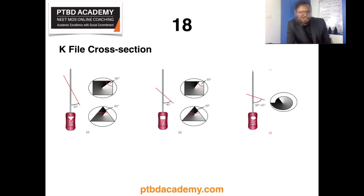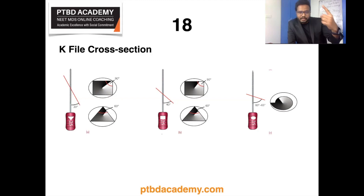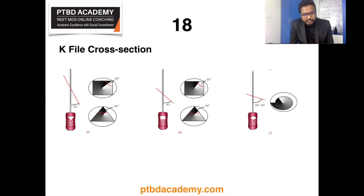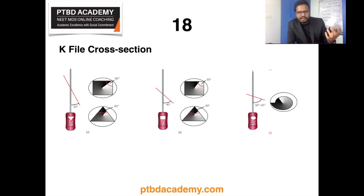If you observe these cross-sections, a square obviously has more fracture resistance because of four sides. The triangular cross-section has less fracture resistance compared to a four-sided blank, but it has higher cutting efficiency. Nowadays, all smaller instruments are manufactured from a square blank, whereas larger instruments are being manufactured from a triangular blank. This is because small instruments tend to fracture easily, so they need more fracture resistance.